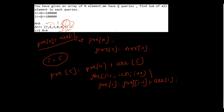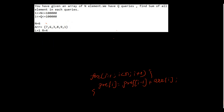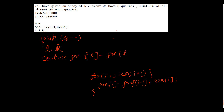After building the prefix array, we handle q queries, each in O(1). The loop runs up to q times. For each query we take inputs l and r, and simply print: prefix[r] minus prefix[l-1], which gives the sum of all elements from index l to r.